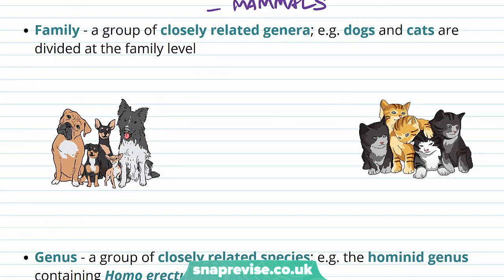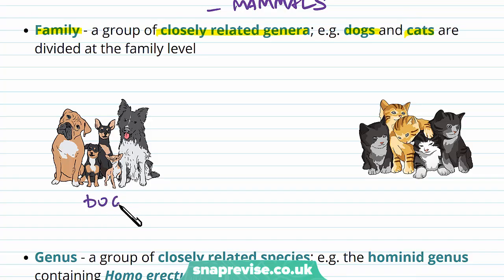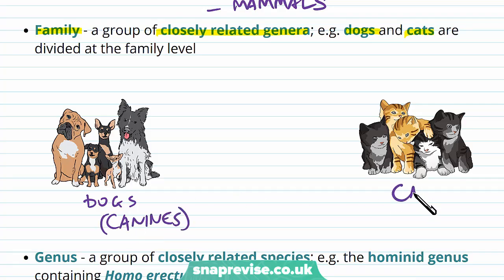Then we have families — a group of closely related genera, like dogs and cats. There's lots of variation within dogs and cats, but we give them a family: canines for dogs and felines for cats.